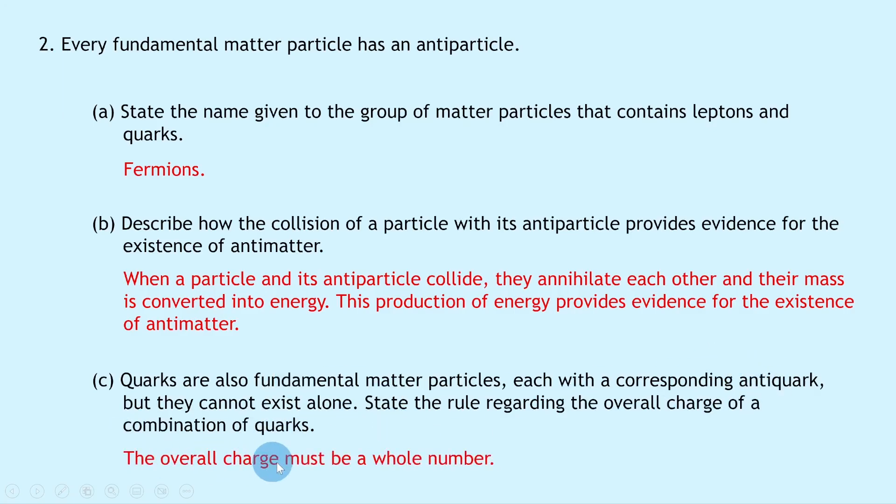This is usually going to be zero, one, or minus one for the total charge of a hadron. For example, a proton has a charge of plus one e and a neutron has a charge of zero, and those are both made up of three quarks each, which remember have a fractional charge. But because there's more than one quark, they combine to form an overall charge of a whole number.